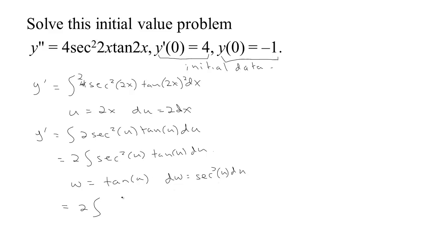So my integral would become 2 times w dw. And the antiderivative of 2w is w squared. So we have w squared plus c. Of course, what was w? w was the tangent. So now we have the tangent squared of u plus c.